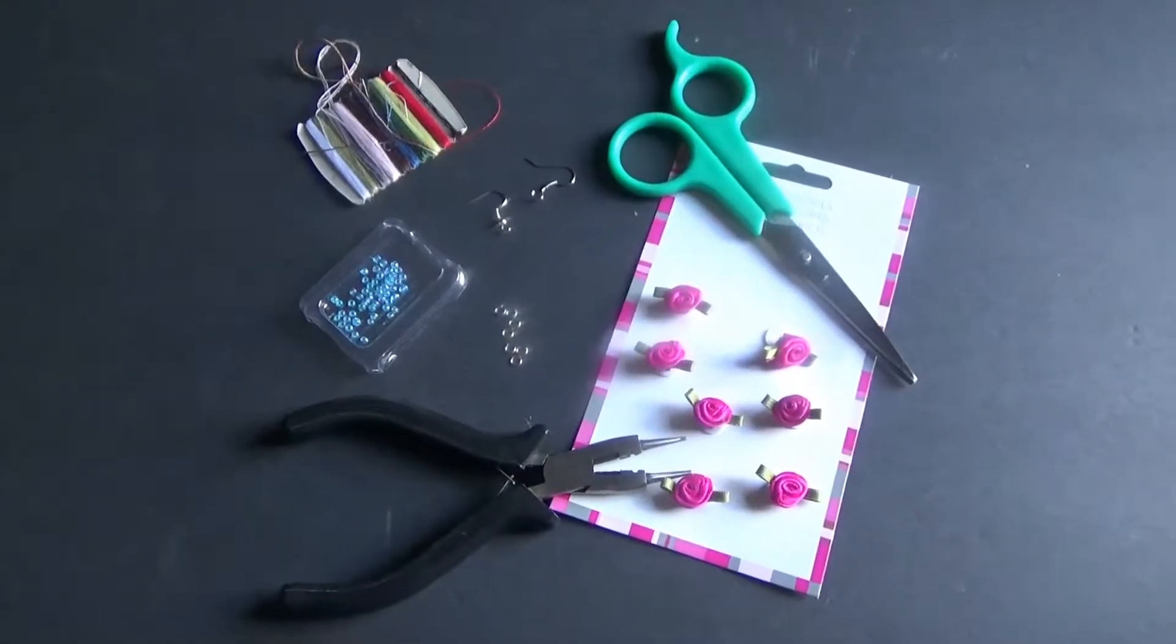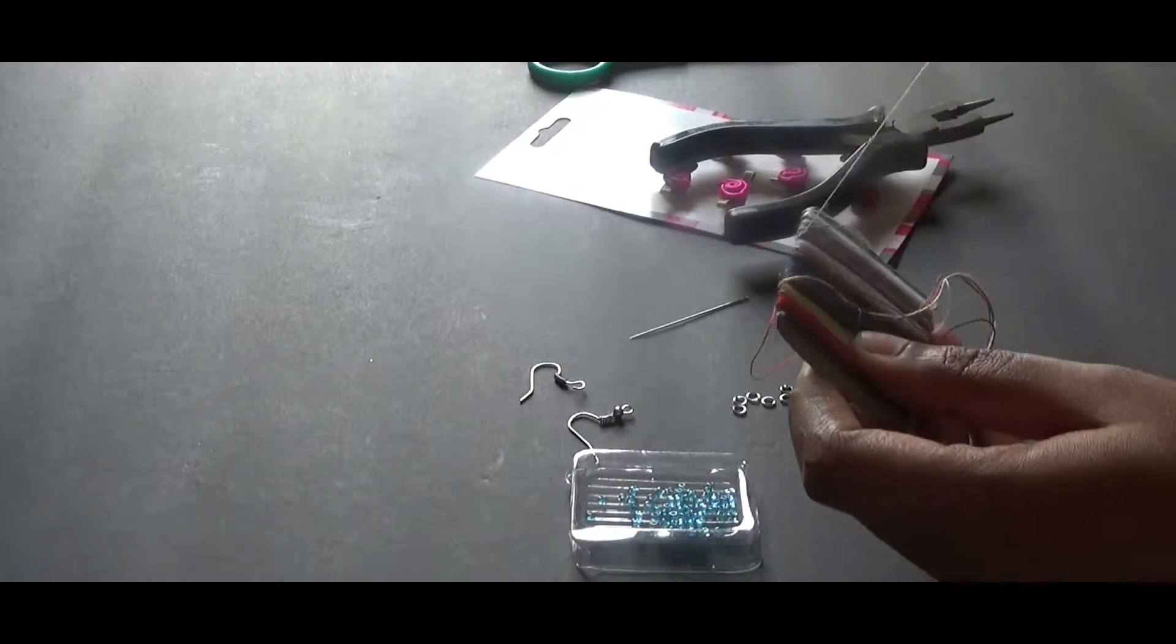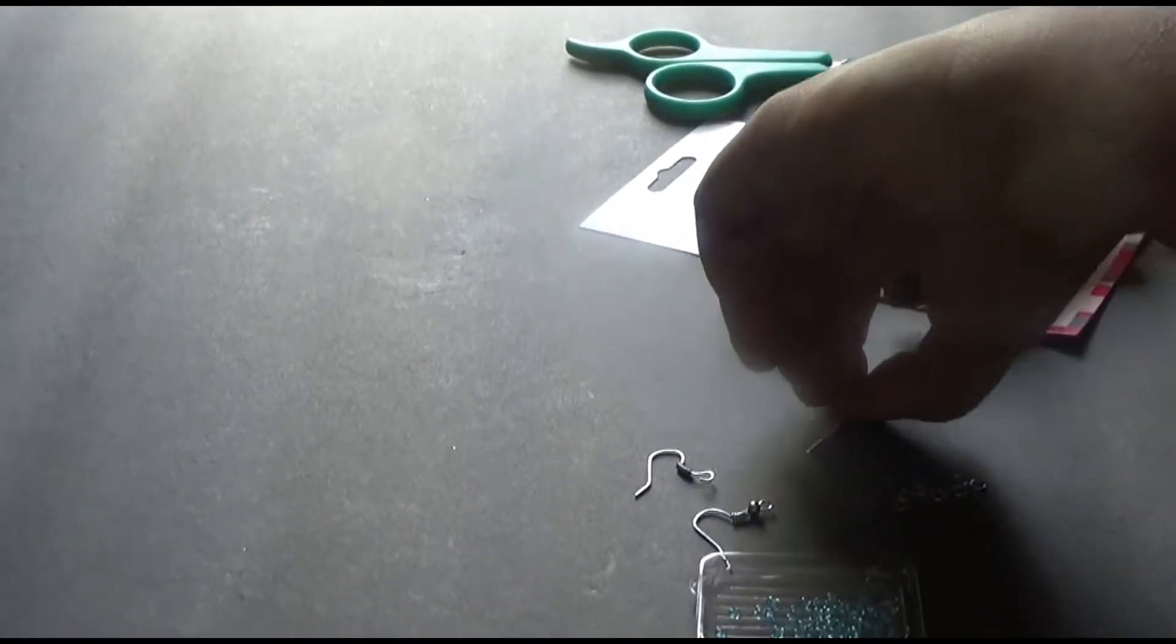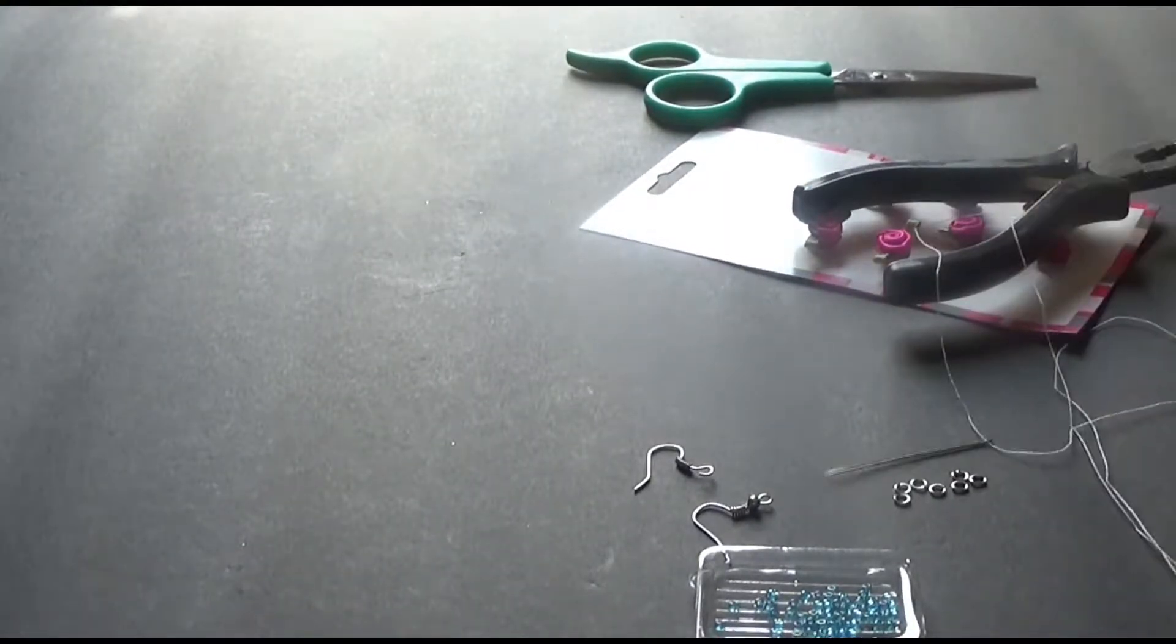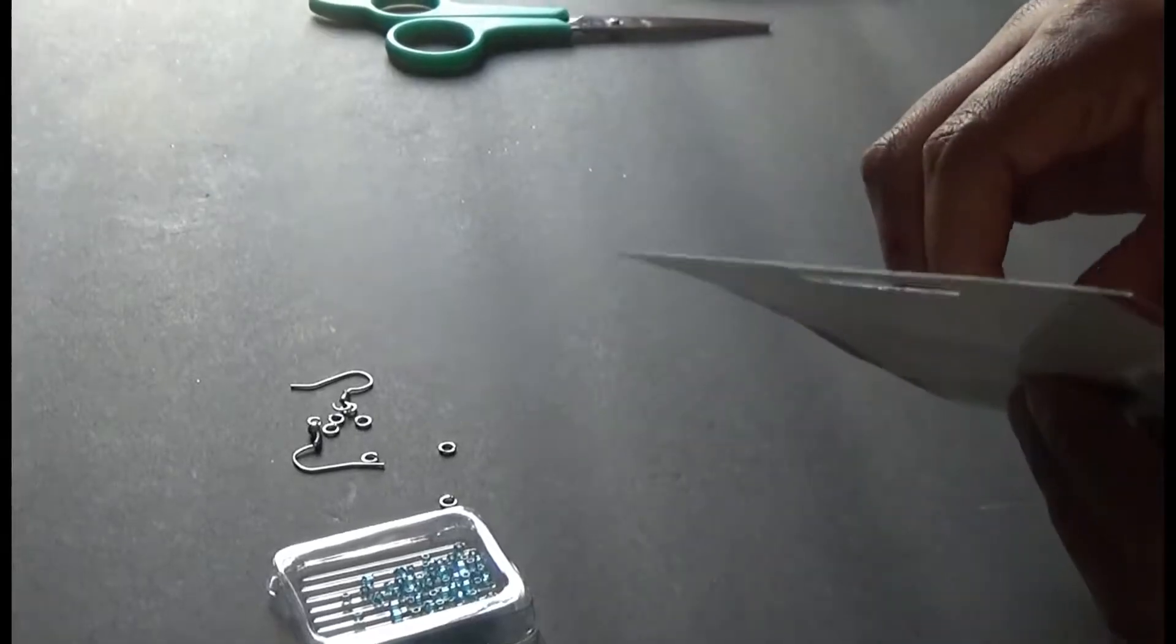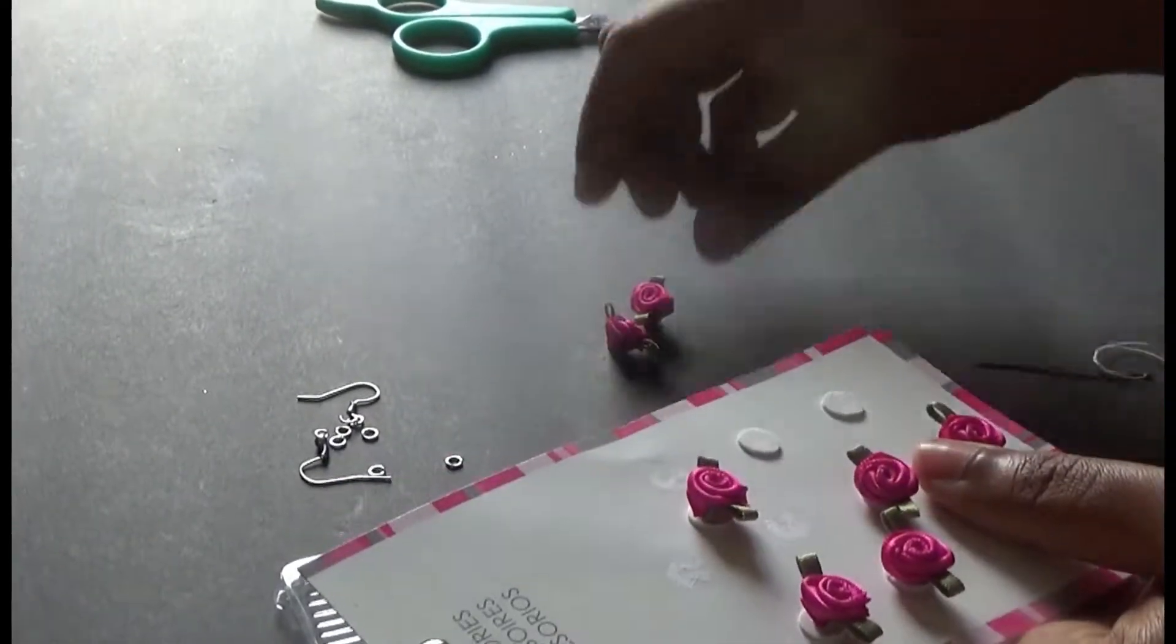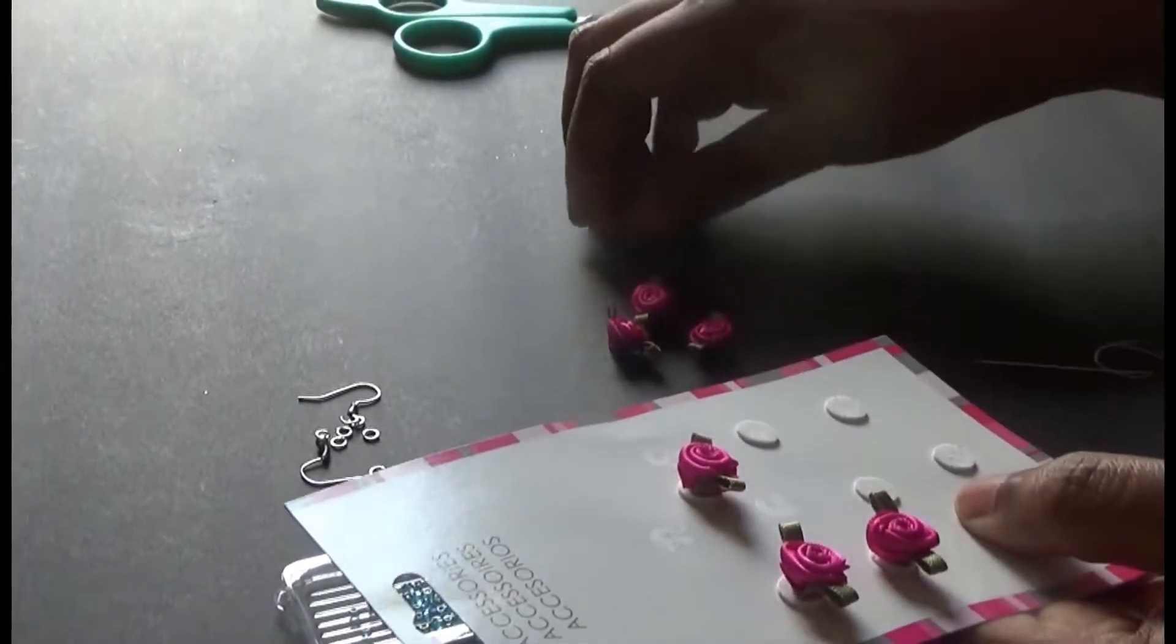I'm going to make this beautiful rosy earring. For making these earrings, I'm going to use some mini roses, needle and thread, jump rings, and earring hooks. And those blue mini beads you see, later on I decided not to use them and keep it really simple. So first of all, I'm going to sew three mini roses together just like this so that they look like a triangle.